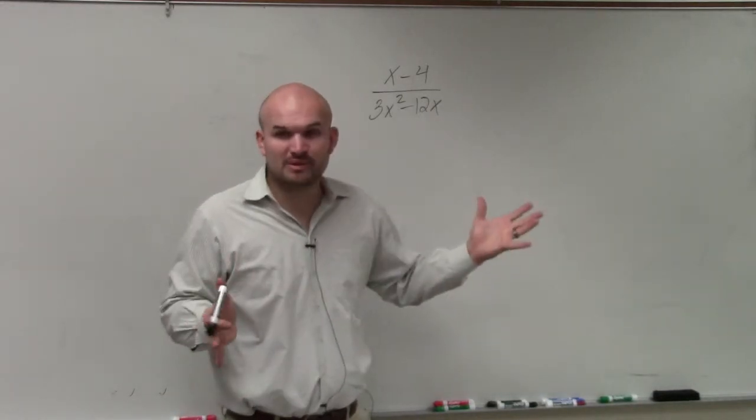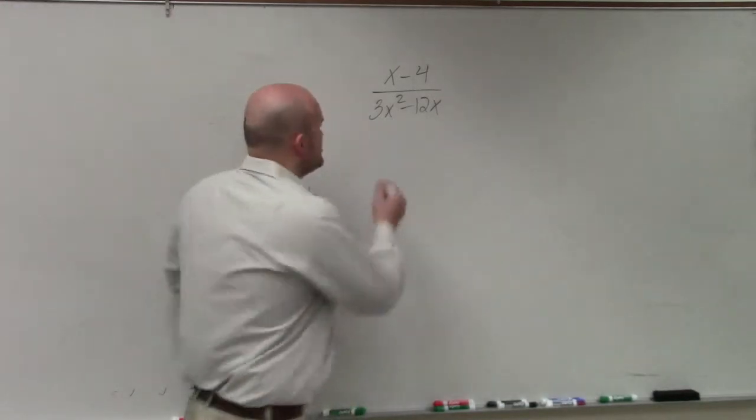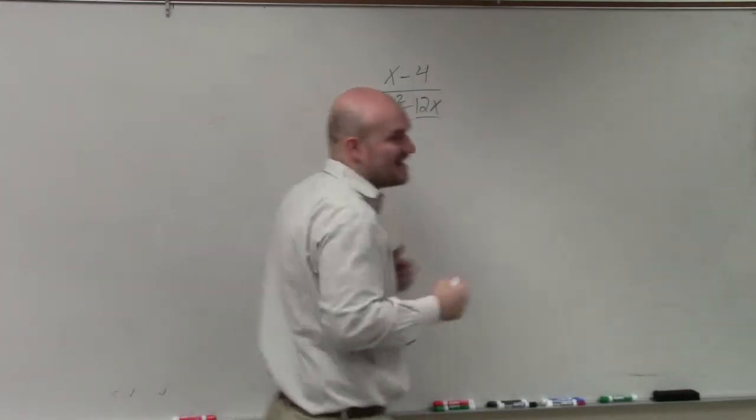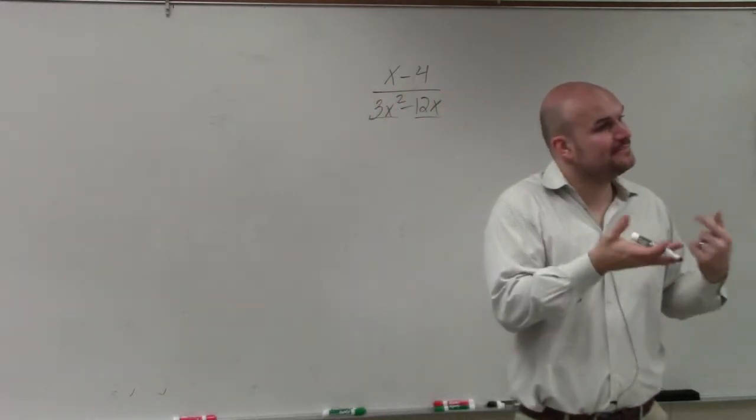Before you even do the trinomial method, always try to factor out common terms. So does 3x squared and 12x have anything in common that you can factor out? They have a 3 and an x.